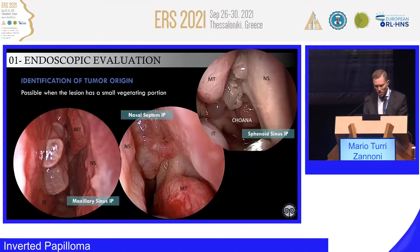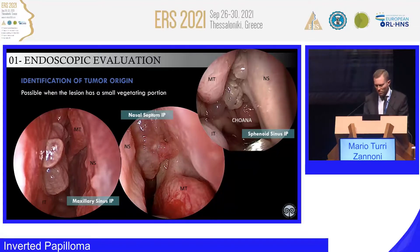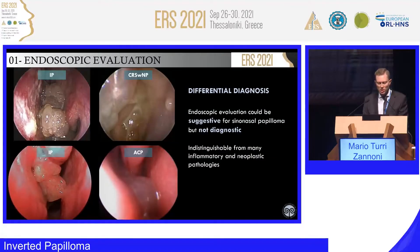In these images, for example, you can try to see the site of onset at the level of the maxillary sinus, in this area on the nasal septum, and in this area on the choana. But of course, this is valid only for small lesions not vegetating into the nasal fossa, because usually the most frequent condition is that you have a very huge mass that completely blocks the nasal fossa, making such a diagnosis not possible. These things only in early stage lesions.